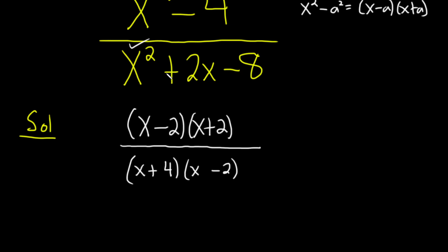x times x is x squared. Four times negative two is negative eight. The inner is four x. The outer is negative two x. Four x minus two x is two x. Boom. So everything there matches up nicely.